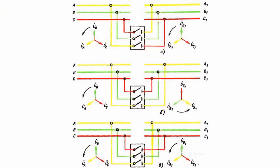A phase indicator is an electric measurement instrument designed to determine phase alternation sequence in three-phase electric circuits. The phase alternation sequence is determined by the rotation direction of three-phase current in electric motors.